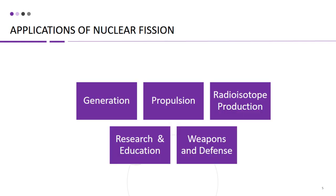Nuclear fission has a wide range of applications beyond electricity generation. Let's explore some of the practical uses of nuclear fission in various fields. Nuclear fission — the process of splitting the nucleus of an atom — has several important applications. One of the most well-known and widespread applications is in the generation of electricity in nuclear power plants. In a nuclear power plant, controlled nuclear fission reactions are used to produce heat, which is then used to generate steam and drive turbines to generate electricity.